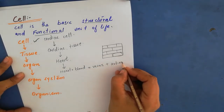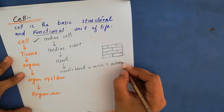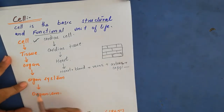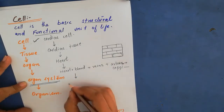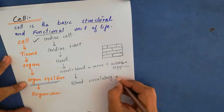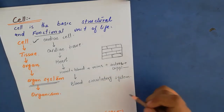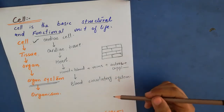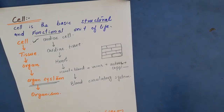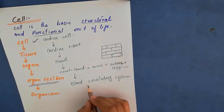Heart plus blood plus veins plus arteries plus capillaries together make an organ system — the blood circulatory system. Can a person stay alive with only the blood circulatory system? No — he needs many systems like the digestive system, respiratory system, and reproductive system. Different organ systems combine with each other to make a living organism.